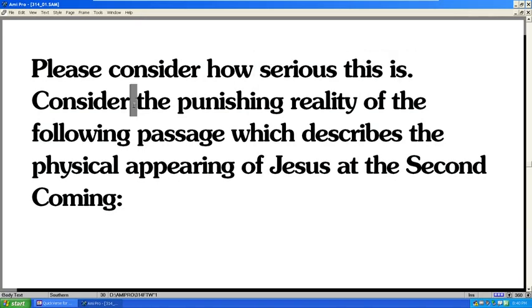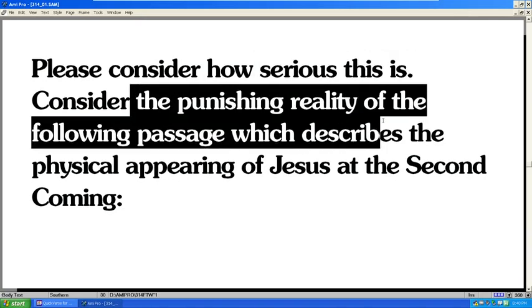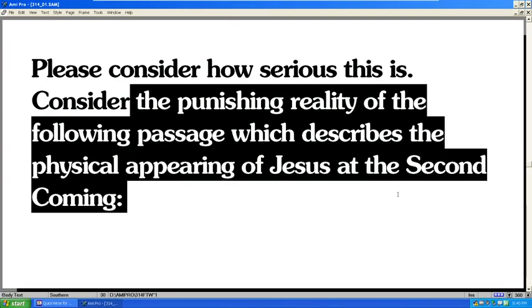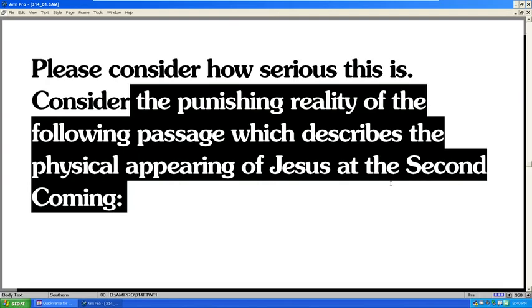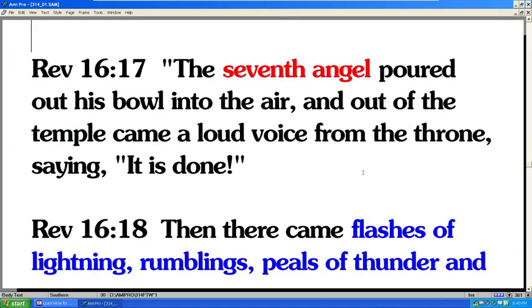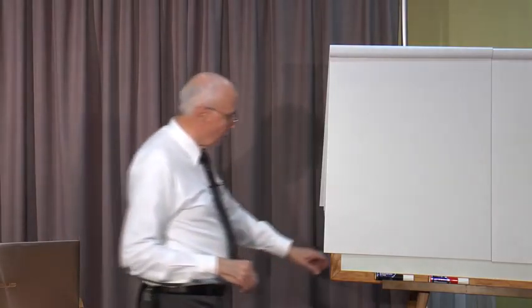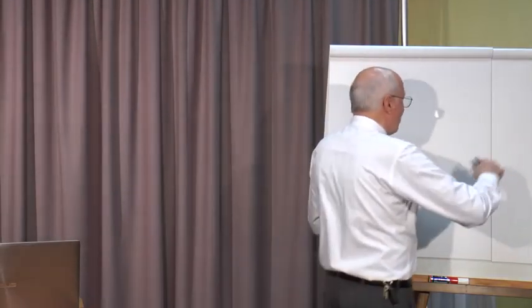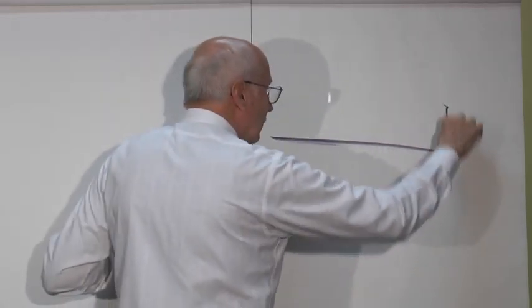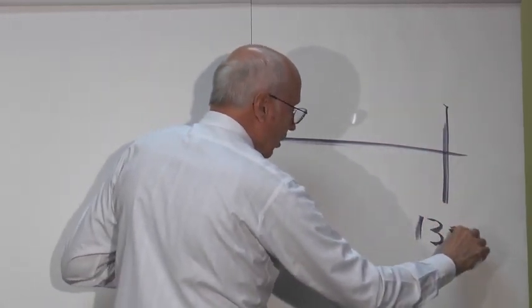So please consider how serious this really is. Consider the punishing reality of the following passage, which describes the physical appearing of Jesus at the second coming. I'm going to jump down to Revelation 16, verse 17. This puts us at the very end of the age. This puts us at the end of the seven bowls. This puts us at day 1335.